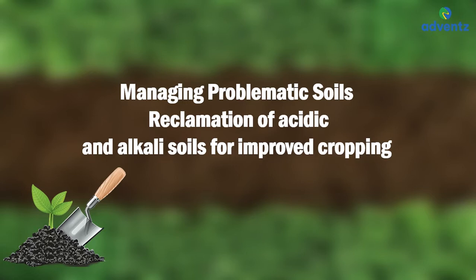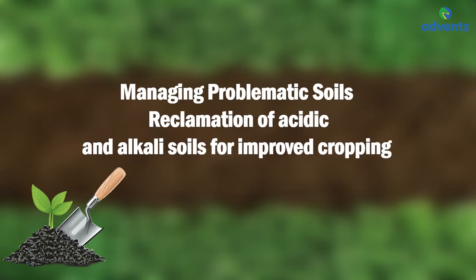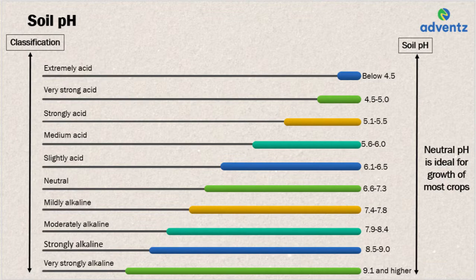Let us start by understanding the pH levels in a soil. Soil pH indicates whether a soil is acidic, alkaline, or neutral. Depending on the degrees of acidity or alkalinity, soils are categorized into extremely acidic, mildly acidic, very strongly alkaline, mildly alkaline, etc. The following table shows how soil classification changes due to the change in pH level.